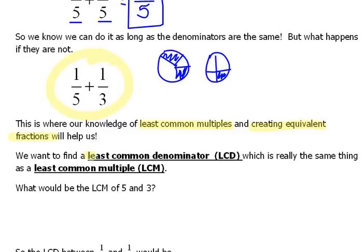If we want to find a least common denominator, which is what that's called, when we want to get something that they have that's the same, this is the same exact thing as a least common multiple that we just learned how to do.